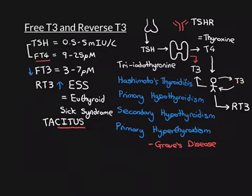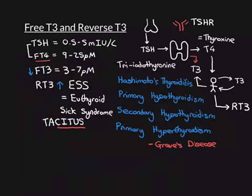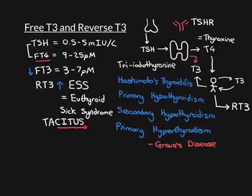So that's what happens in euthyroid sick syndrome, and the pathology is not particularly well understood, but it is a recognised condition that occurs in people who are extremely ill — either from a very bad infection, due to cancer, renal failure, or extremely advanced stages of starvation. It has to be extremely severe starvation before this starts to happen.